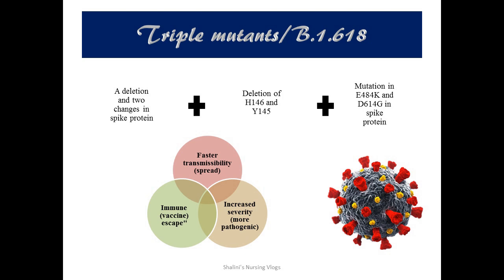Recent news says that triple mutated strains have been detected in four states in India — Maharashtra, West Bengal, Delhi, and Chhattisgarh — and most of the samples have been detected having this triple mutated strain, otherwise called B.1.618. As the name suggests, there are three variations in the original form, which include deletion and changes in the spike protein: deletion of H146 and Y145, mutation in E484K, and D614G in the spike protein.